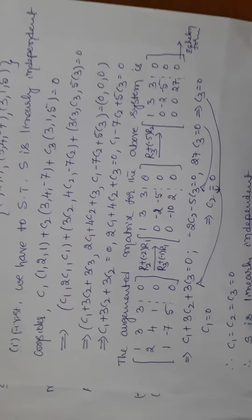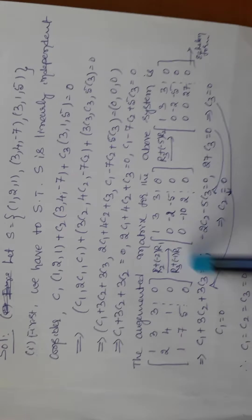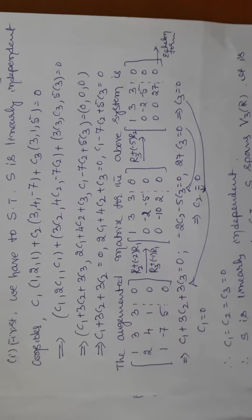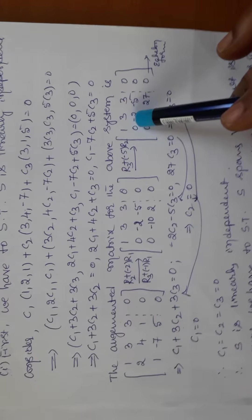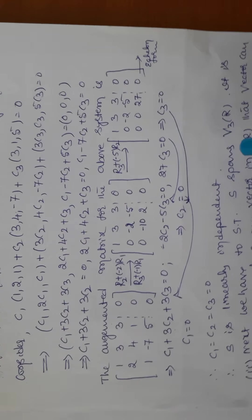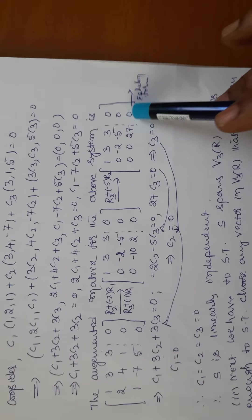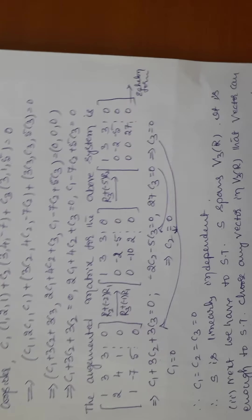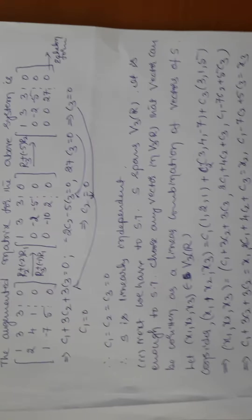We write the augmented matrix from the system of equations and apply elementary row operations to convert to echelon form. The first row must have a non-zero pivot, convert the rest of column one to zero; then the second row second element becomes the next pivot, convert the following row's second element to zero. From the echelon form, we get c3 = 0, then c2 = 0, then c1 = 0. Therefore S is linearly independent.